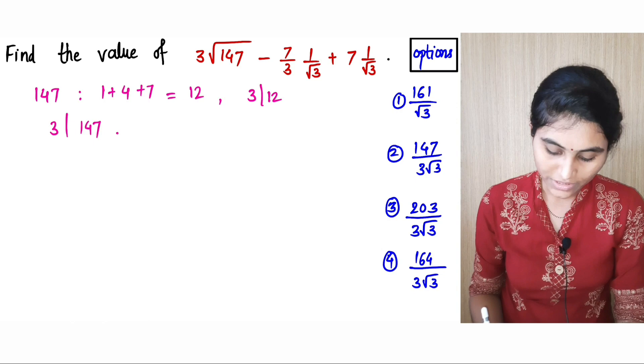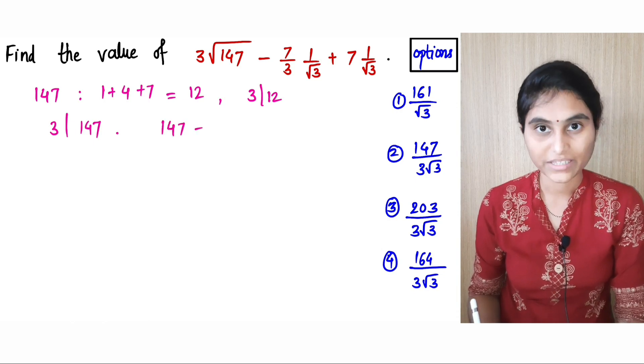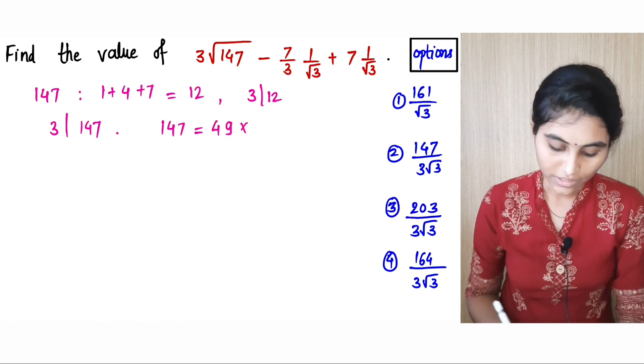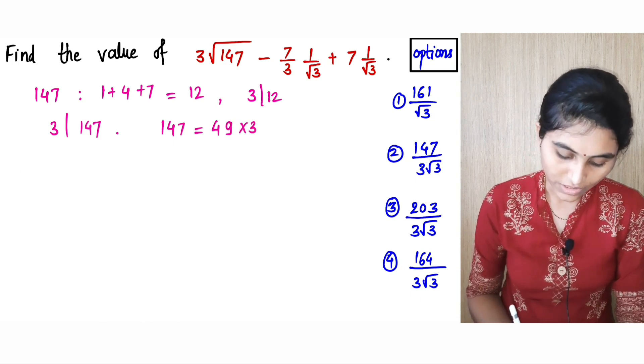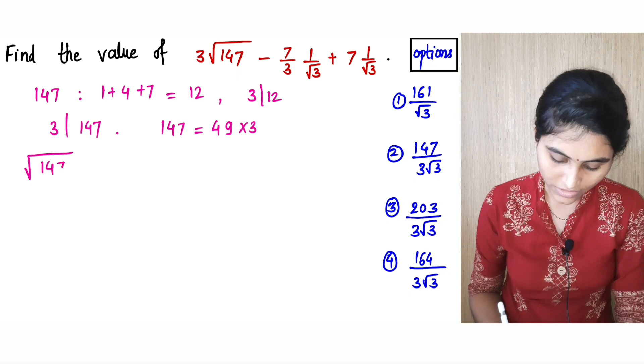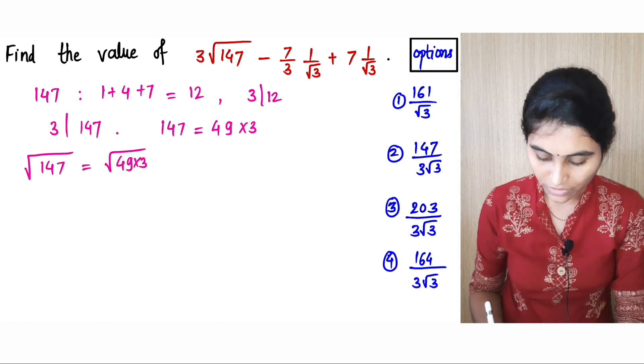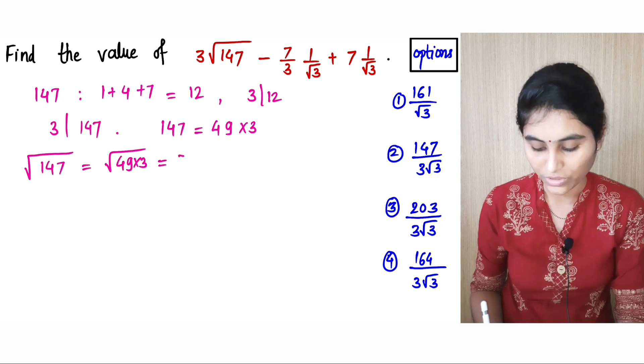We can write 147 as divided by 3, so the quotient is 49. Therefore we can write 147 under the root as 49 times 3 under square root, which is equal to 7 times root 3.